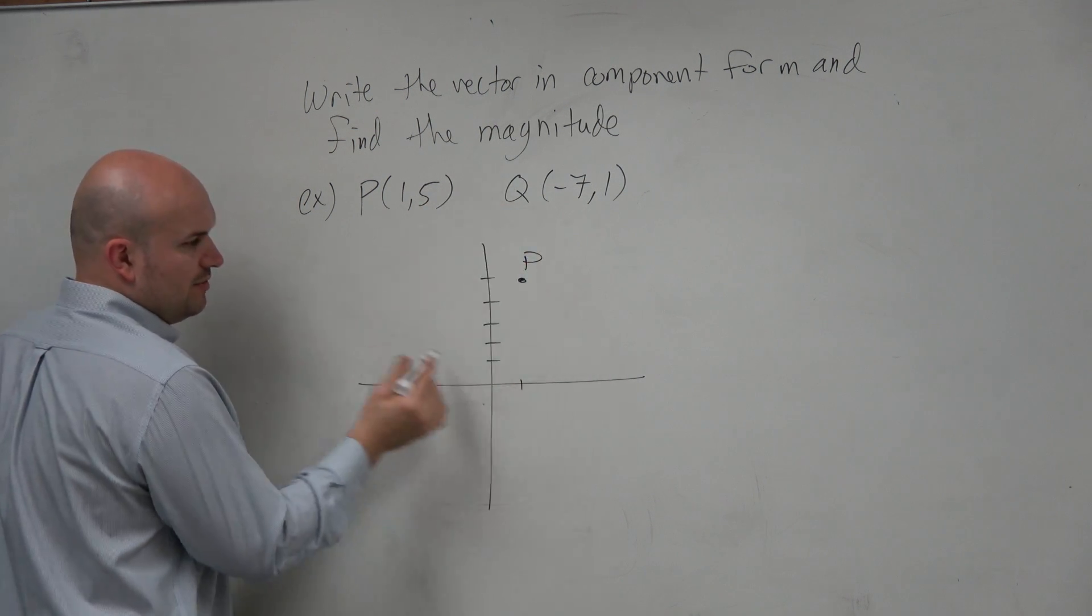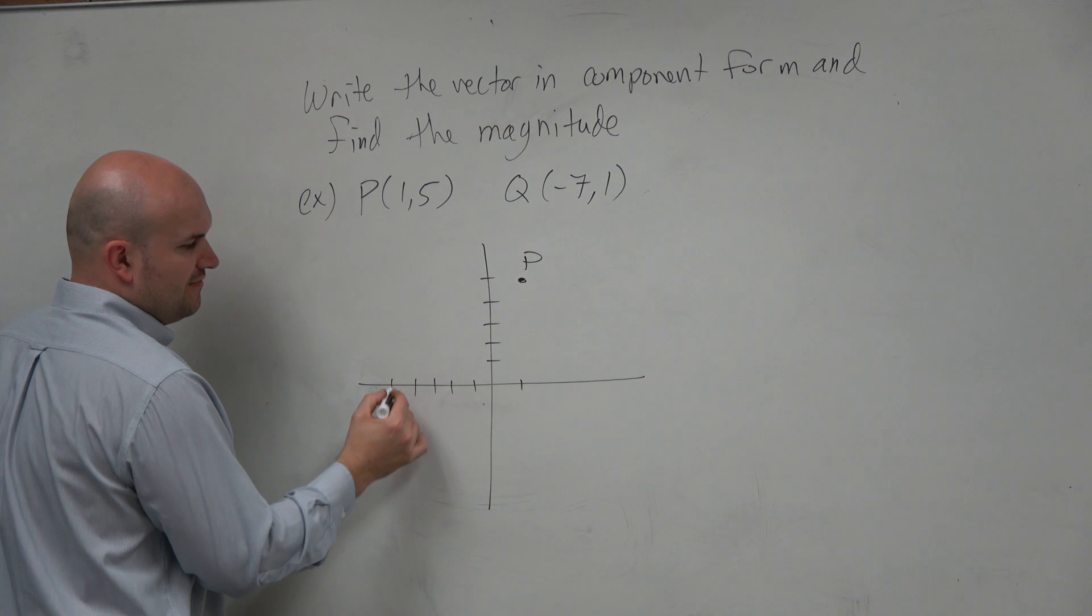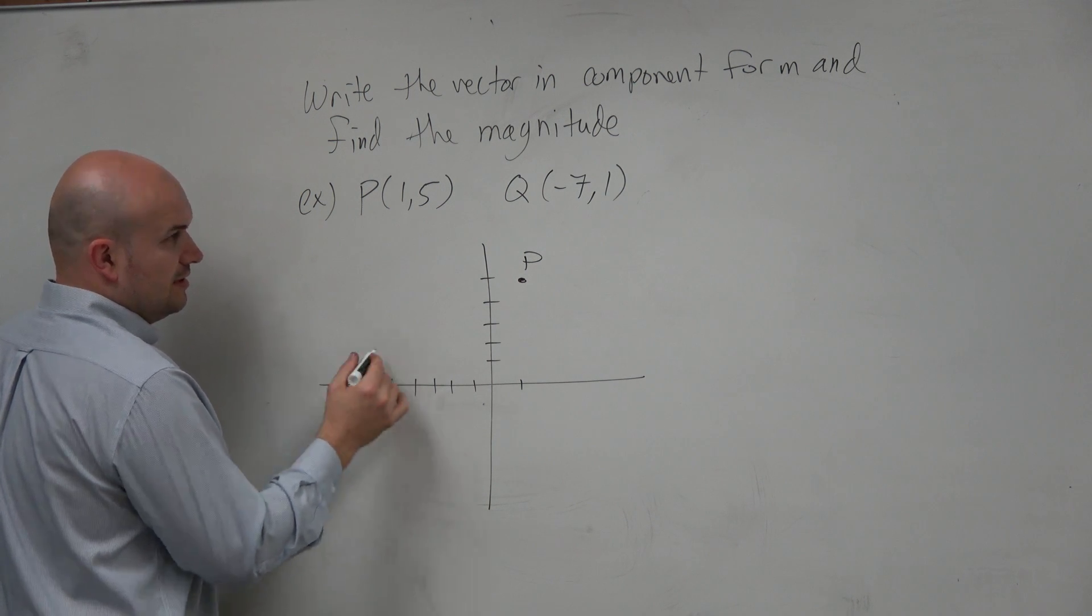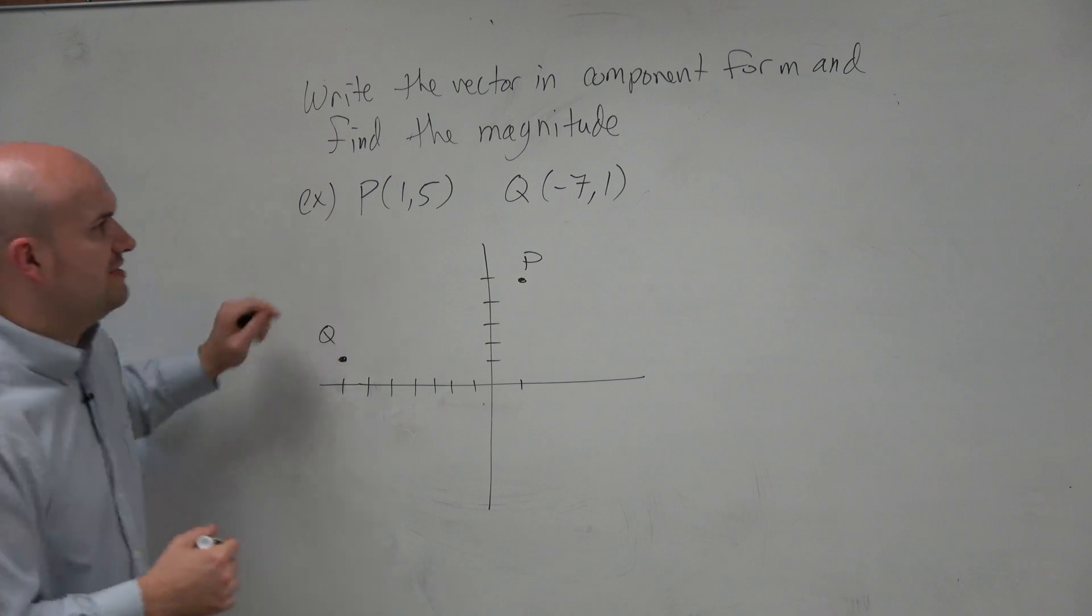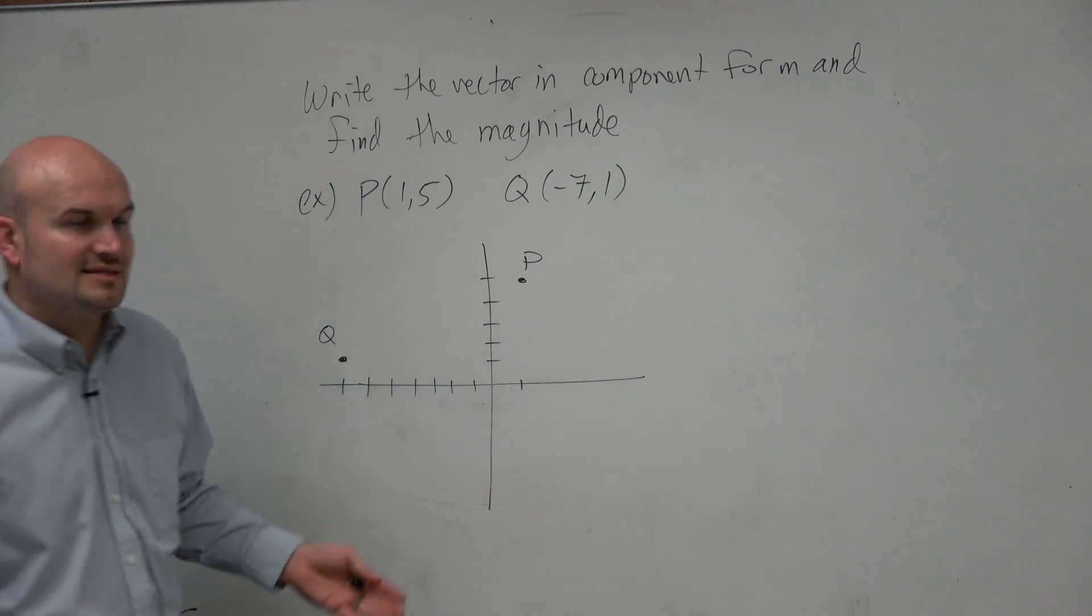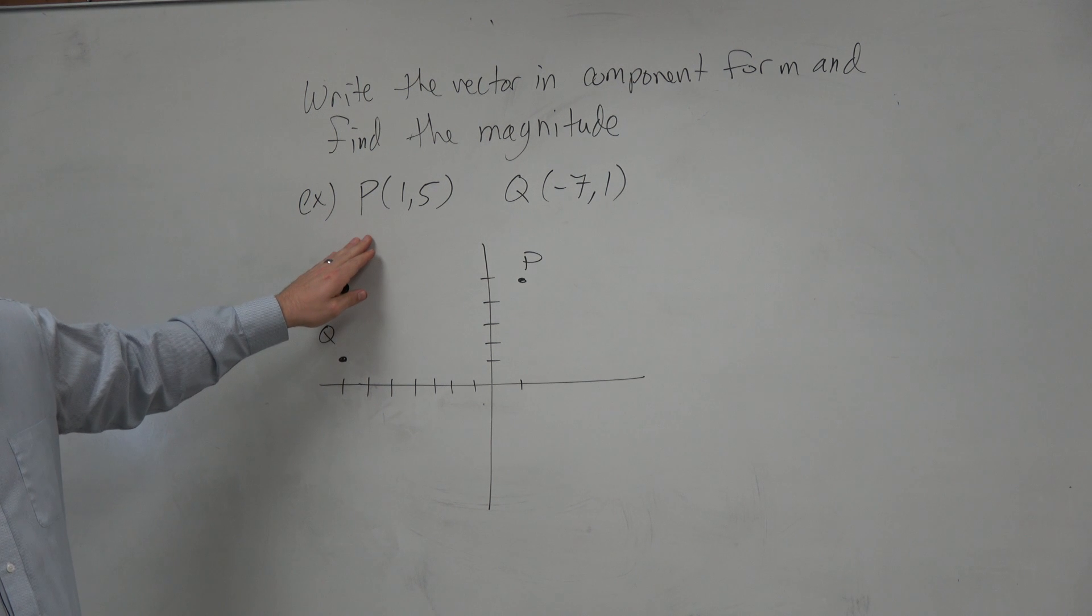Q is at (-7,1). 1, 2, 3, 4, 5, 6, 7 and positive 1. Oh, I'm sorry, I didn't tell you. That's kind of a bad issue. I didn't tell you where we were going, right? Are we going P to Q or Q to P?